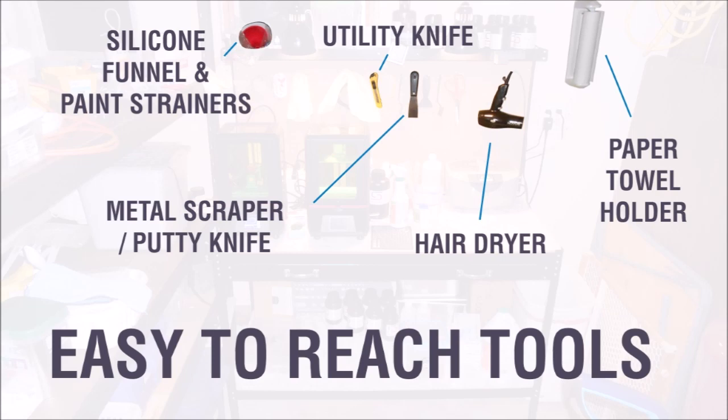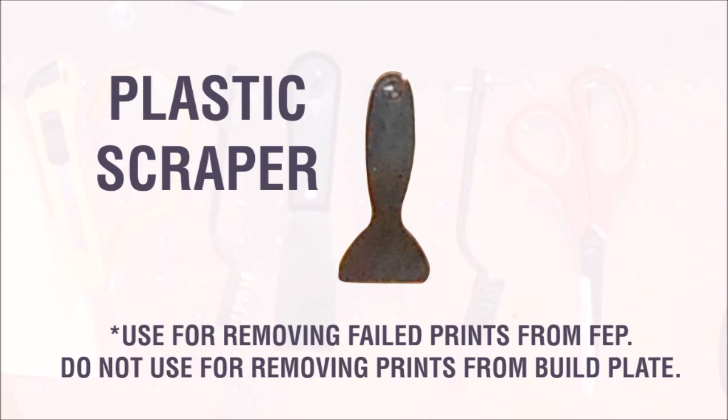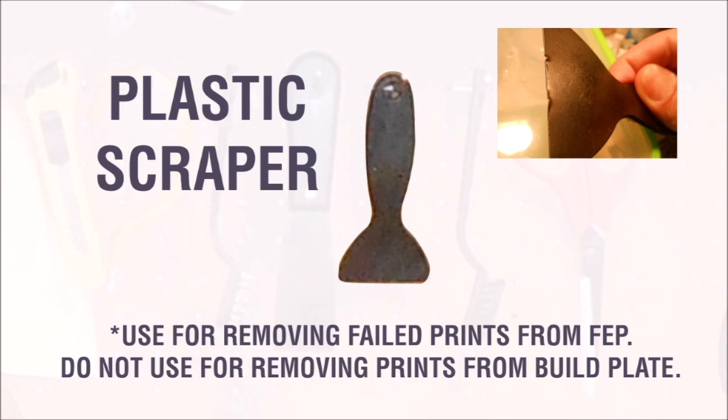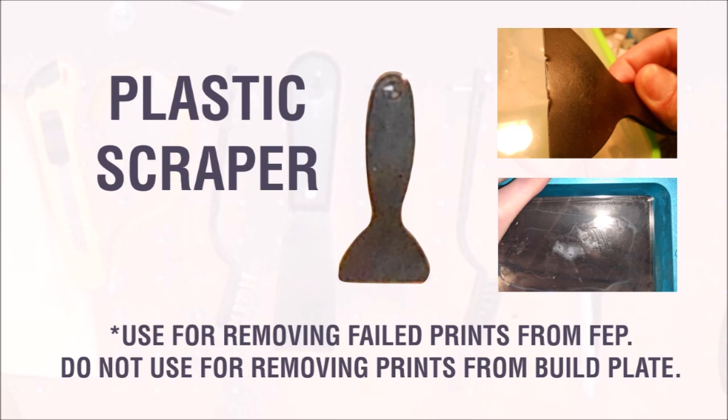Because a metal scraper, or putty knife as it's commonly called, is used to remove prints from the build plate. But you know what isn't used to remove prints from the build plate? This plastic scraper. It should only be used to remove failed prints and bits that get stuck to the FEP sheet in your vat. The first time you use this plastic scraper to remove a print from the build plate, it's going to get dinged up and damaged. And the moment it gets bent out of shape like that, it becomes worthless and you risk damaging your FEP sheet should you try to use it to remove any failed prints stuck to the vat in the future.